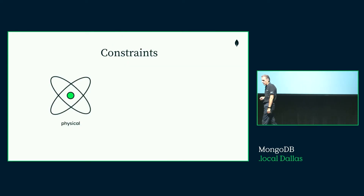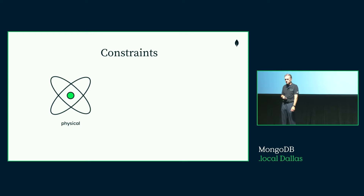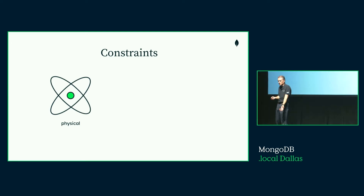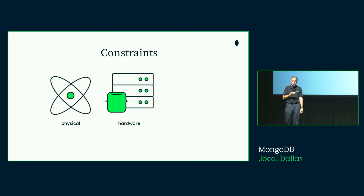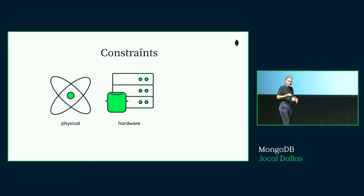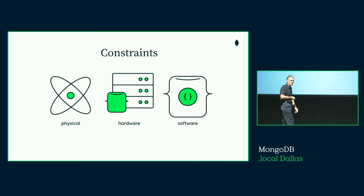When you model for a system, you're going to have physical constraints. If you want your data accessible in the U.S. from someone in Australia, there's latency — that's a physical limitation you can't overcome. You may also have hardware constraints. Disk is cheap but slow. The alternative is RAM, which is more expensive. You need to compromise, and that's what your data model is basically trying to work around.